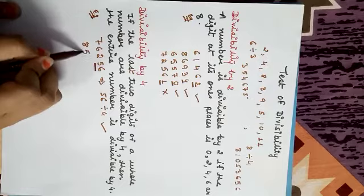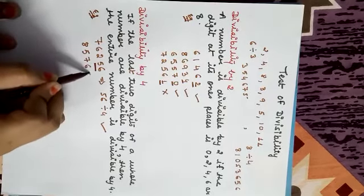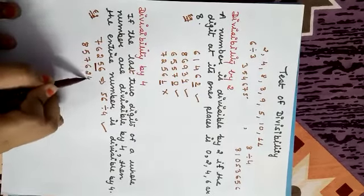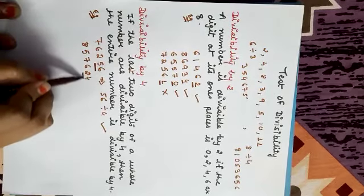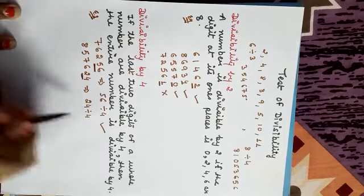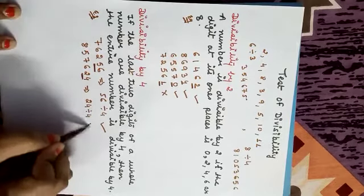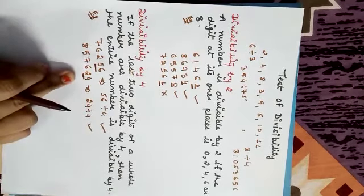Another example: 8,57,624. The last two digits are 24. Is 24 divisible by 4? Yes — 24 divided by 4 is 6. So the complete number is also divisible by 4.